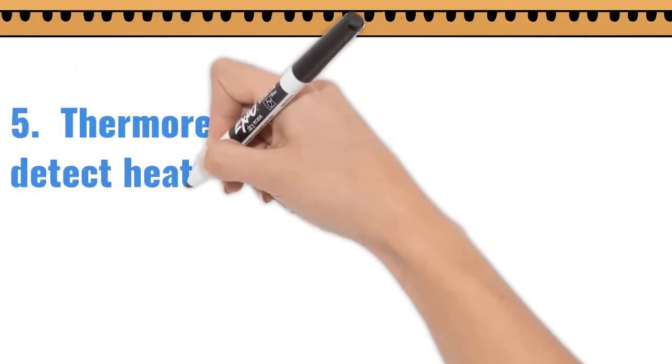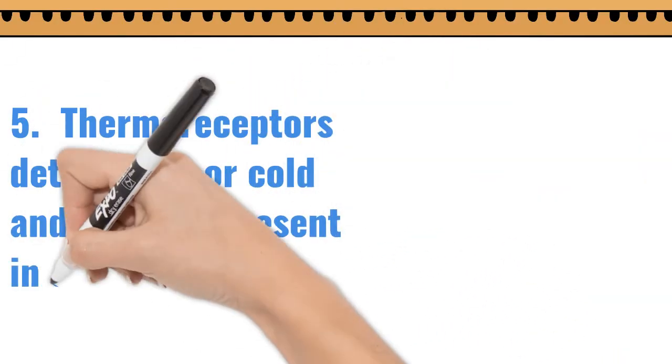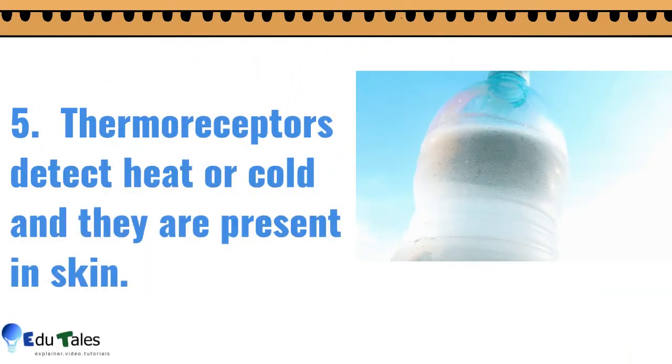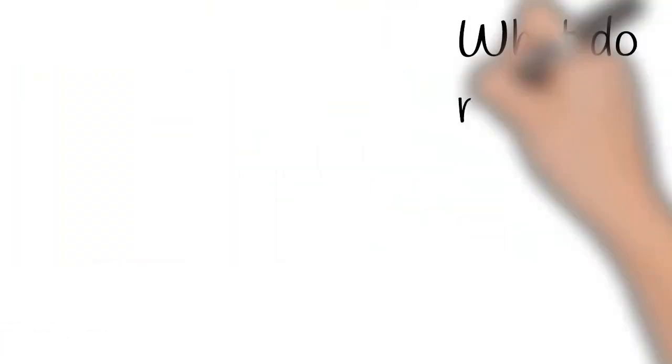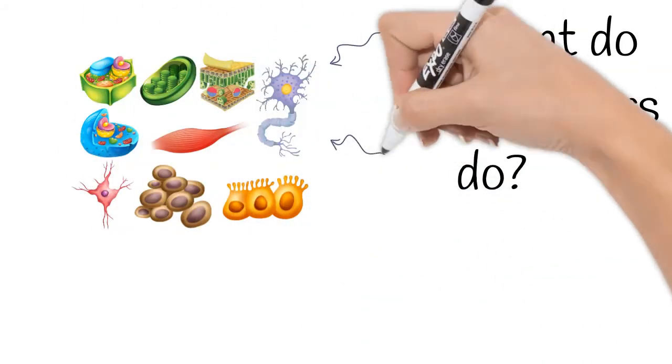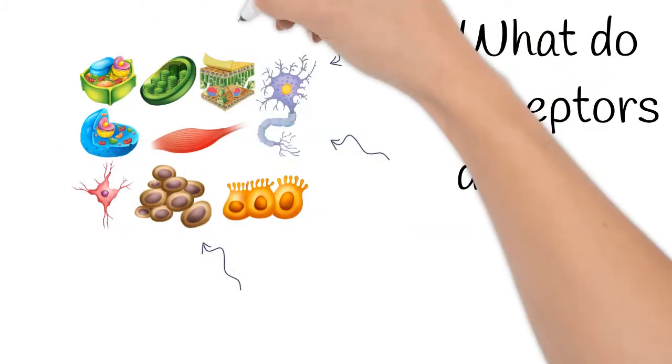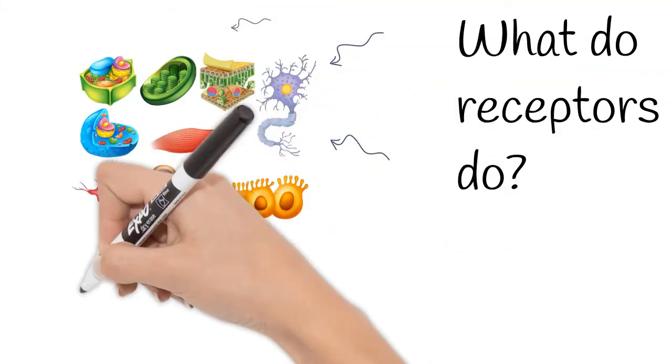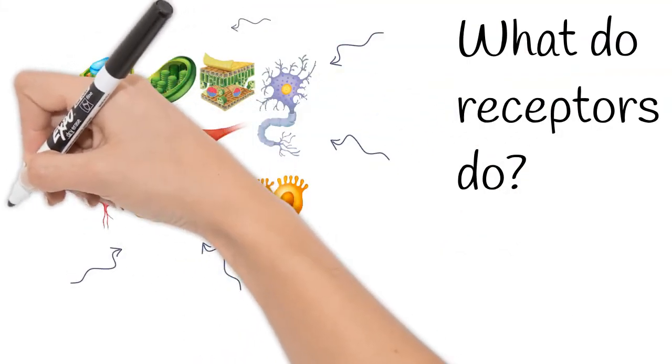So what do they do? They will receive stimuli from the surrounding environment in the sense organ, and then they will send the message conveyed by them to either spinal cord or brain.